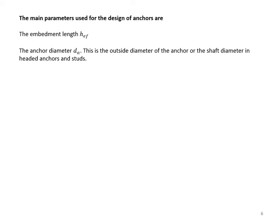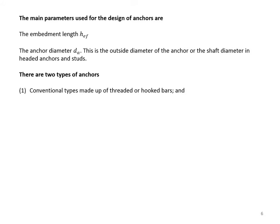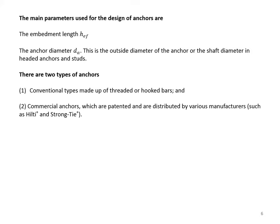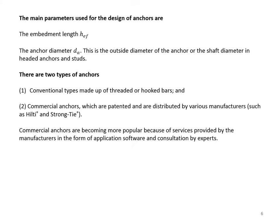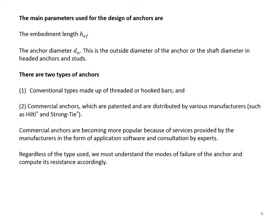The main parameters used for the design of anchors are the embedment length HEF and the anchor diameter DA. This is the outside diameter of the anchor or the shaft diameter in headed anchors and studs. There are two types of anchors: conventional types made up of threaded or hooked bars, and commercial anchors which are patented or distributed by various manufacturers such as Hilti and Strong Tie. Regardless of the type used, we must understand the modes of failure of the anchor and compute its resistance accordingly.